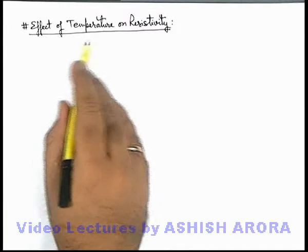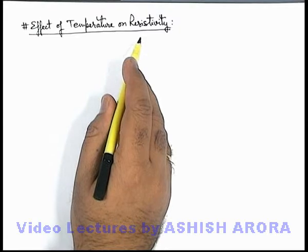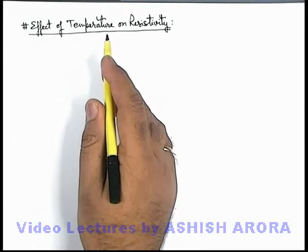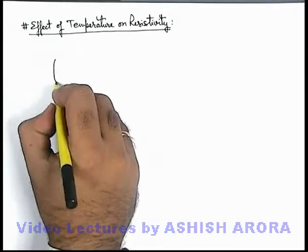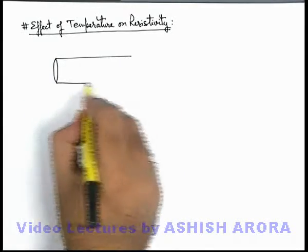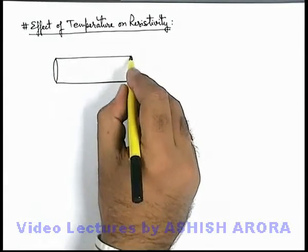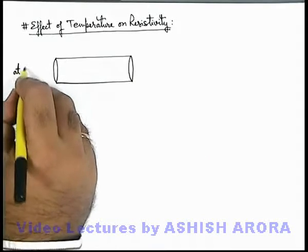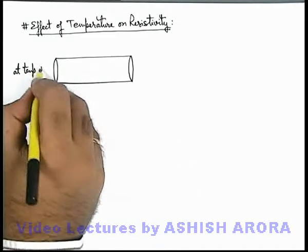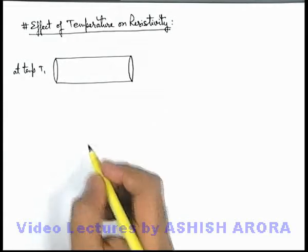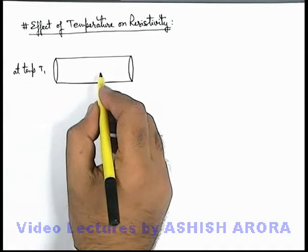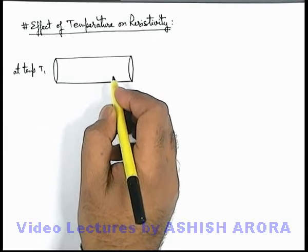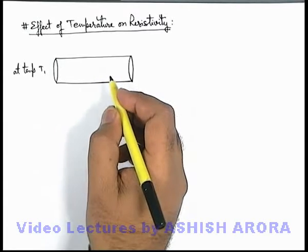Let us discuss the effect of temperature on resistivity. To understand the concept of variation of resistivity with temperature, consider a conductor in which there are plenty of free electrons. We talk about the conductor at temperature T1. At every temperature, free electrons are in randomized Brownian motion and are under continuous collision with their neighbors.